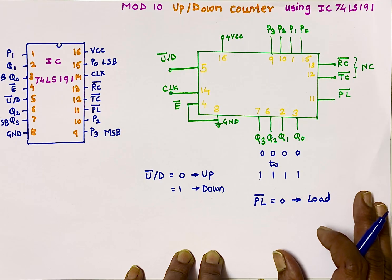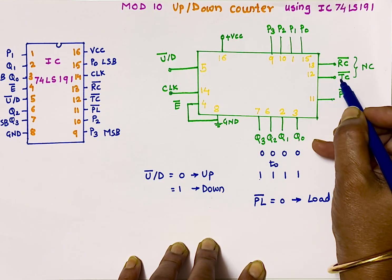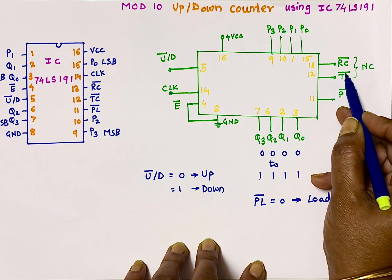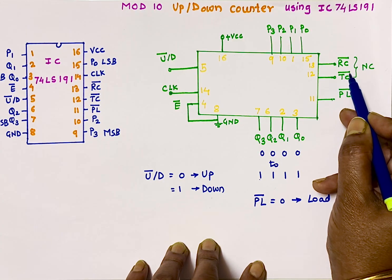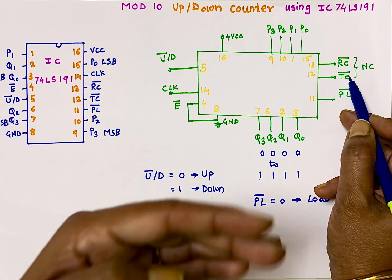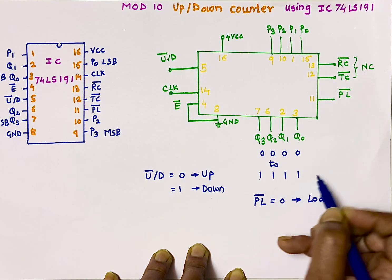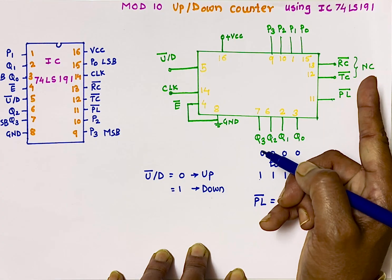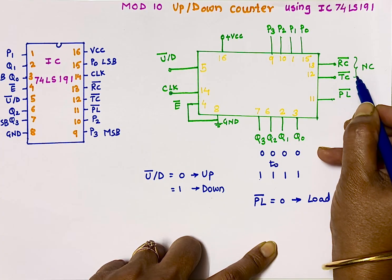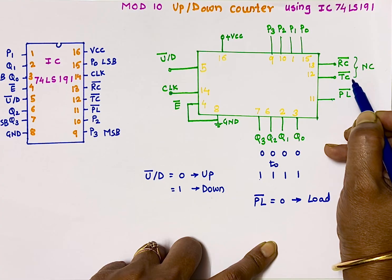In up mode the counter counts in the upward direction; in down mode it counts in the downward direction. The IC also has two output pins: terminal count and ripple clock. Terminal count, TC bar, is active low. It will output 0 normally, and when the counter reaches its maximum value — 1111 in up counting mode, or 0000 in down counting mode — the terminal count will become 1.